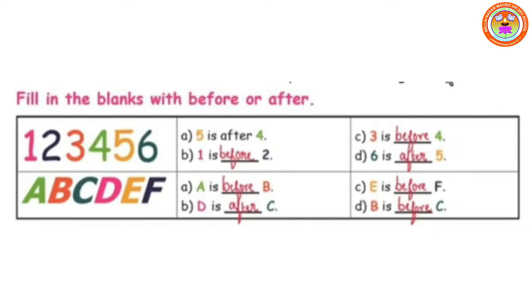And next: where is 3? — 3 is before 4. And the last one: where is 6? — 6 is after 5.